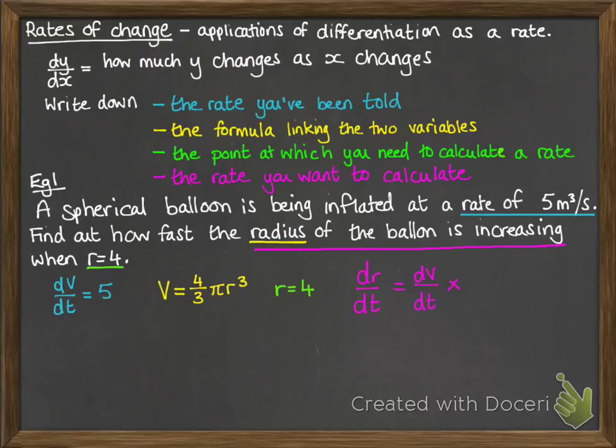So given the rate of dv by dt, what would we have to do to it to turn it into dr by dt? So we need to introduce dr and we need to cancel out dv. So we do that with multiplying by dr by dv. Because then those dv's would cancel and give us that dr by dt that we're looking for. So dv by dr we get by differentiating v. So that gives us 4 pi r squared.